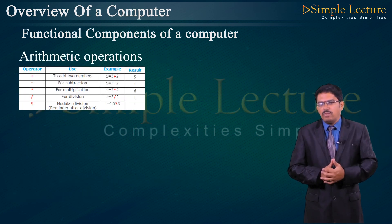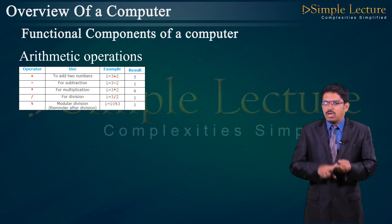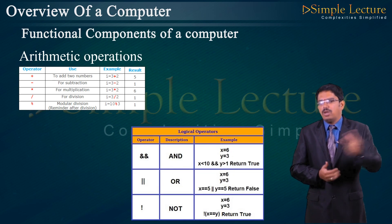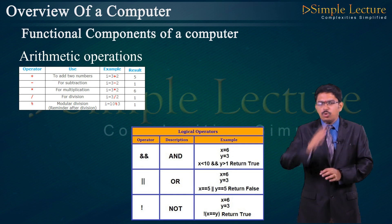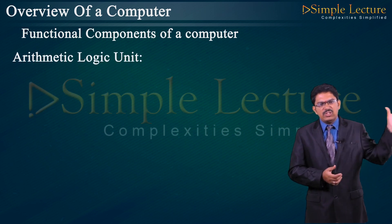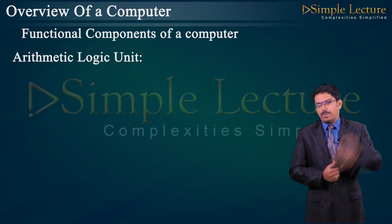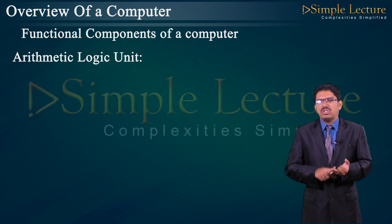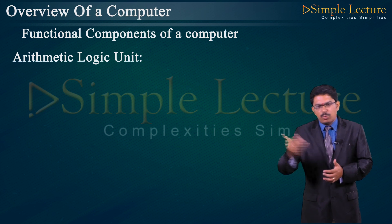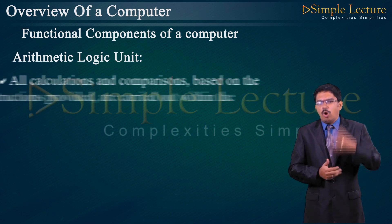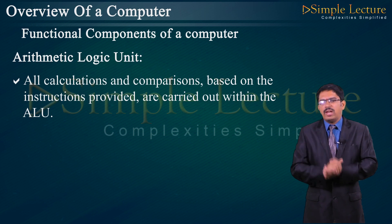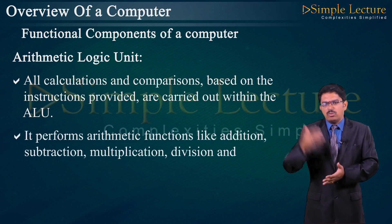Arithmetic operations include addition (+), subtraction (−), multiplication (*), and division (/). Logical operations include AND, OR, and NOT operators. The Control Unit controls the entire process of the system. The ALU performs arithmetic operations such as addition, subtraction, multiplication, division, and logical operations such as greater than, less than, and equal to.